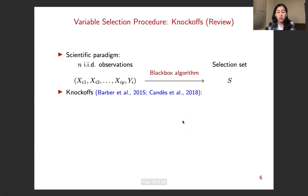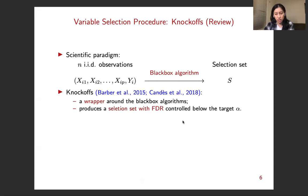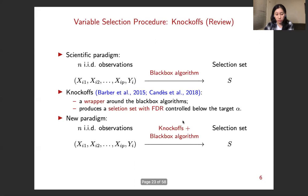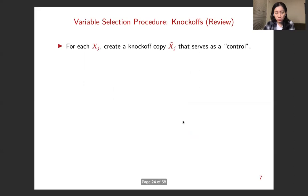So the knockoffs framework proposed by Barber et al. in 2015 and Candès et al. in 2018 is a wrapper around these black box algorithms. And it produces a selection set with FDR control at the desired level. So with this knockoffs framework, the new scientific paradigm would be given the observations, the scientist applies the black box algorithm and the knockoff wrapper, and she gets a selection set with the nice FDR control.